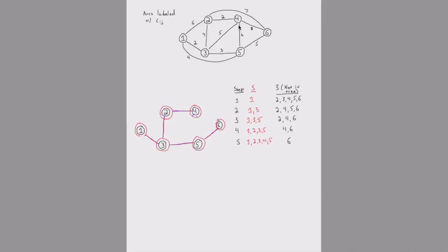That is the final MST — all nodes are now part of the tree. This is a pretty straightforward approach to finding the MST: maintain the set of nodes currently in the tree and the set not in the tree, look at arcs connecting those two sets, find the cheapest arc going from a tree node to a non-tree node, and use it to bring another node into the tree.